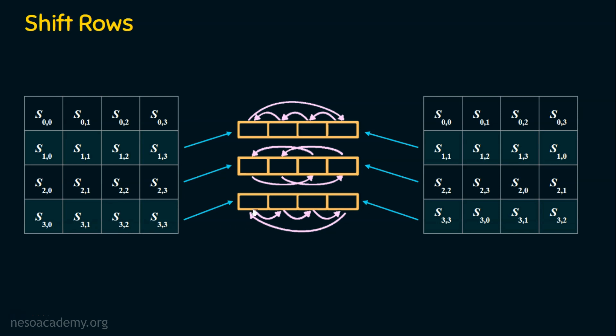For the fourth row, S[3][0] takes a new position, S[3][1] is placed here, S[3][2] is placed here, and S[3][3] is placed here — a three-byte left circular shift. In simple terms: the first row is not altered; the second row has a one-byte left circular shift; the third row has a two-byte left circular shift; and the fourth row has a three-byte left circular shift. This is the shift row operation.